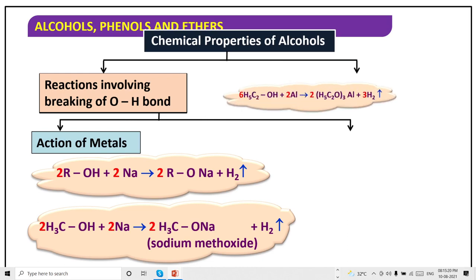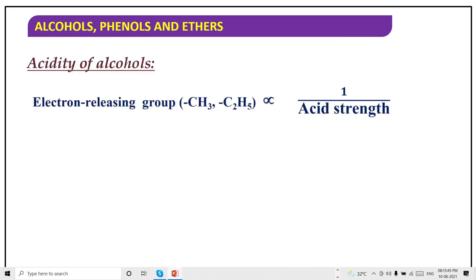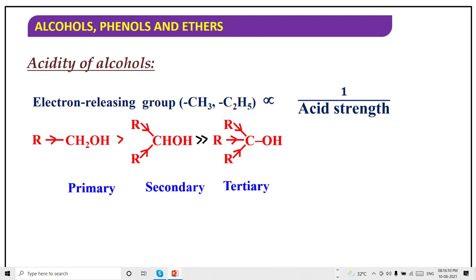It won't react with metal hydroxides and bicarbonates. With aluminum it will take up three. Acidity is inversely proportional to electron-releasing groups. More the electron-releasing group, more electron density will be there on oxygen, and it will be difficult to lose H⁺.